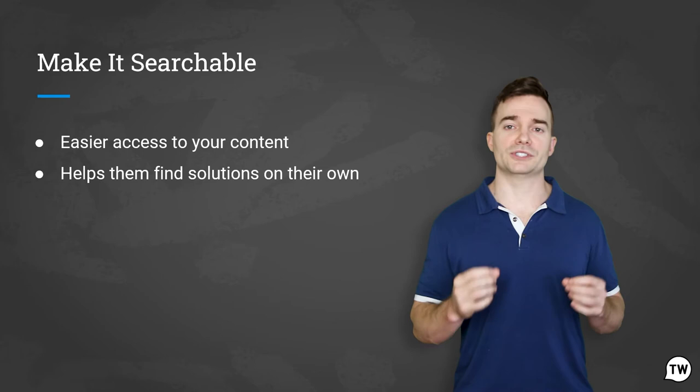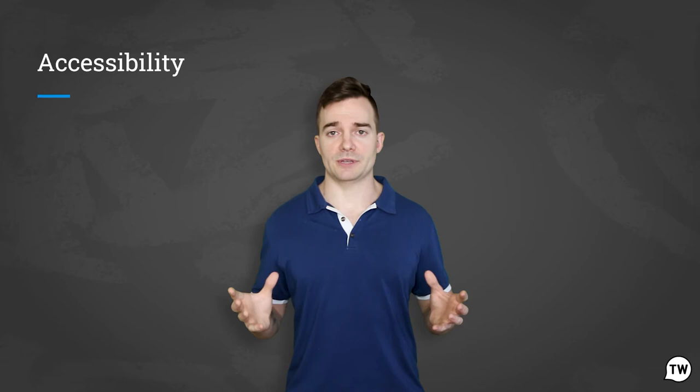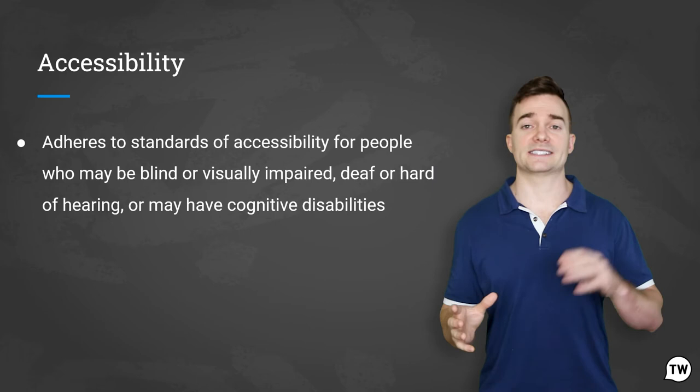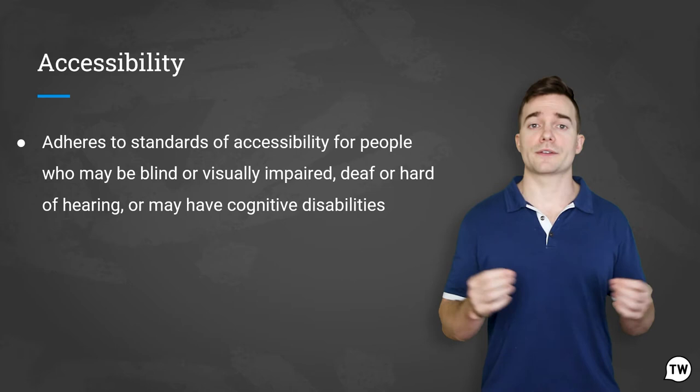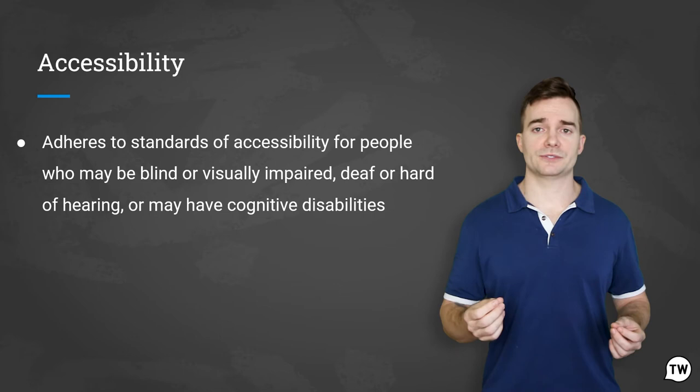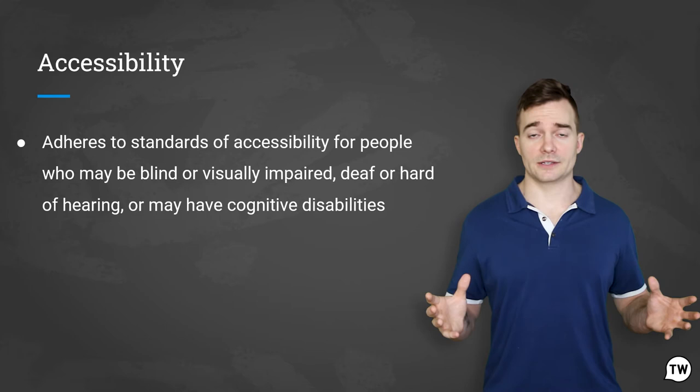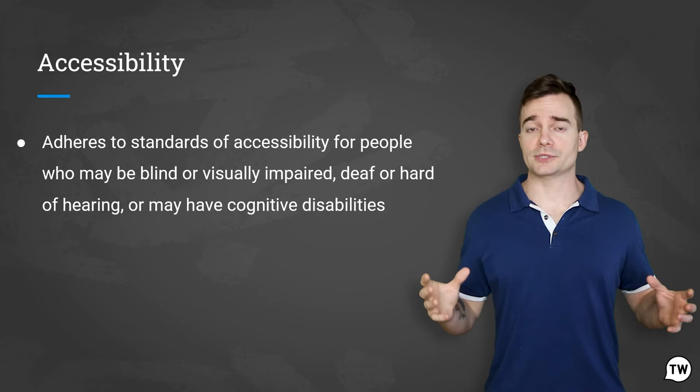Creating accessible content is another crucial element of user documentation. This entails ensuring that electronic documentation adheres to standards of accessibility for people who may be blind or visually impaired, deaf or hard of hearing, or may have cognitive disabilities. Many of your customers need this to fully understand and access your user documentation — don't leave them behind. This often means making your text easy to read on mobile, including meta descriptions for images, and ensuring it's easily found.